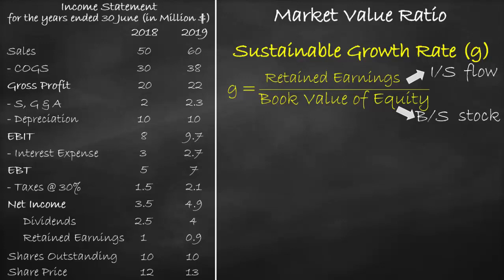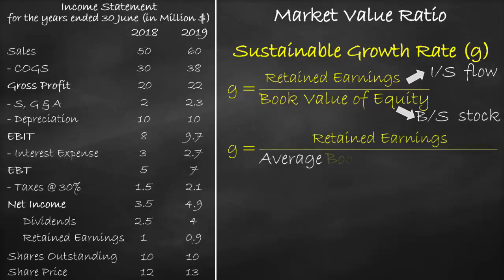In summary, any time you find a financial ratio that includes an item from the income statement and an item from the balance sheet, you will use the income statement item and get the average of the two balance sheet items. So we can rewrite the sustainable growth rate as retained earnings divided by average book value of equity.